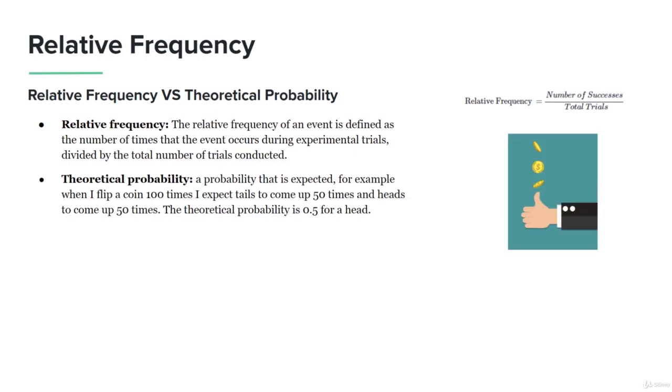Theoretical probability is a probability that is expected. For example, when I flip a coin 100 times, I expect tails to come up 50 times and heads to come up 50 times. The theoretical probability is 0.5 for each, because you have two separate outcomes.